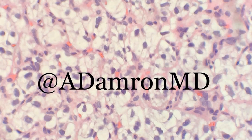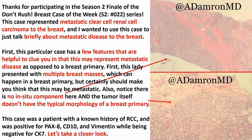At this point you're thinking: this is strange, this is odd to be in the breast. If this were in the kidney, I wouldn't hesitate to call this clear cell RCC — it has the classic features: the chicken wire vasculature, the nice cleared-out cytoplasm, the nuclei that aren't terribly pleomorphic. In fact, that's what this was — this was metastatic clear cell renal cell carcinoma to the breast.